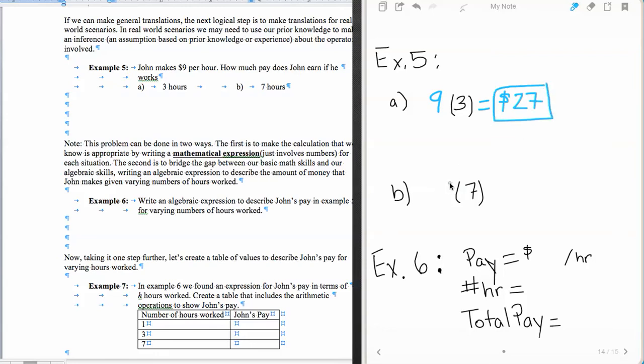Now, John's pay if he works seven hours, that would be $9 per the seven hours, and that's going to give us $63 instead of the 27. So what we're seeing here is that there is a functional relationship between John's pay and the number of hours that he works.